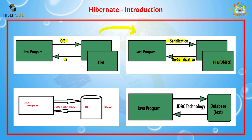However, files as a back end have some major drawbacks — redundancy, inconsistency, and security problems. Because of these issues with using files as a back end, we moved to using a database as the back end. In the third option, we use JDBC technology.